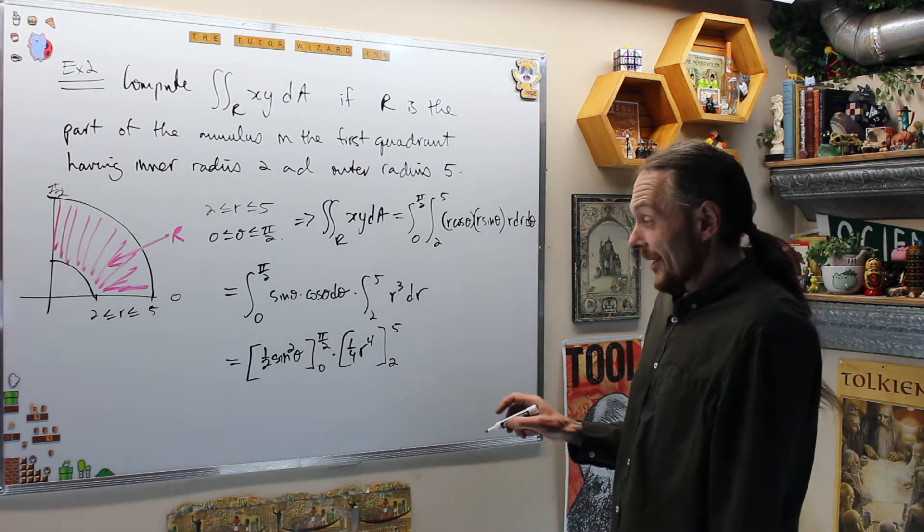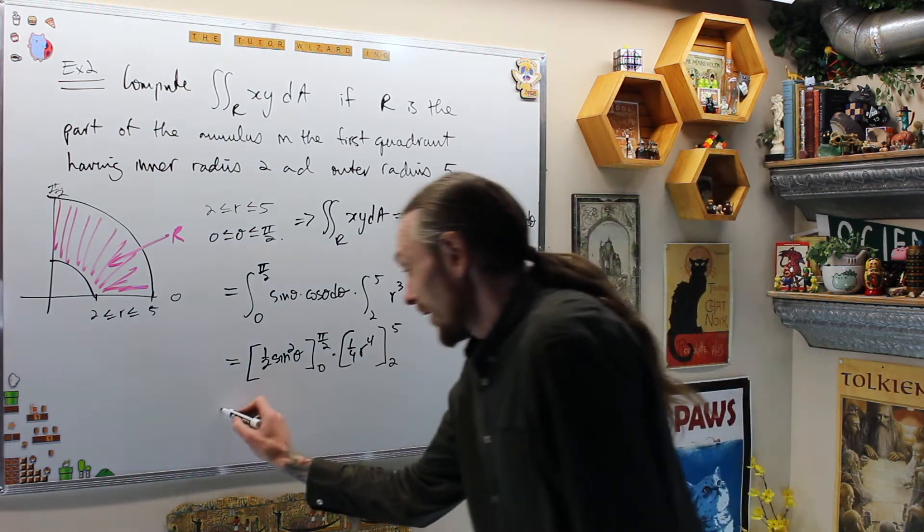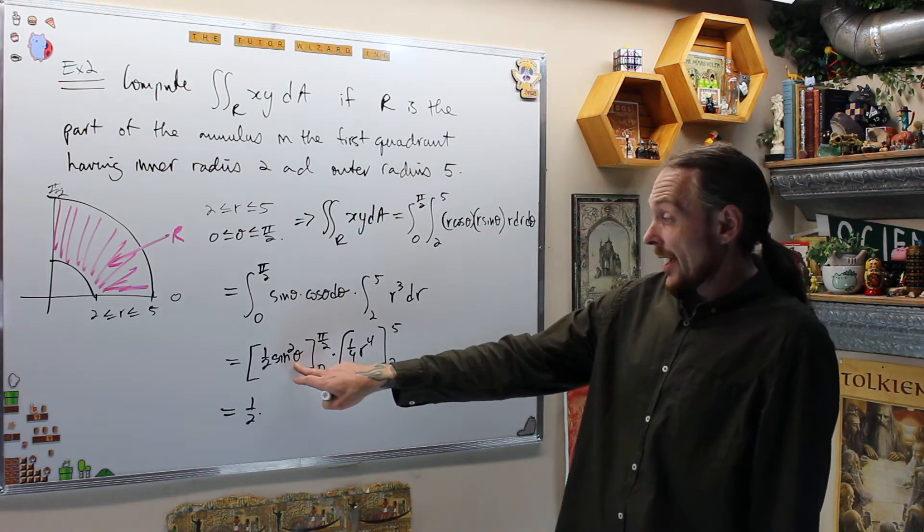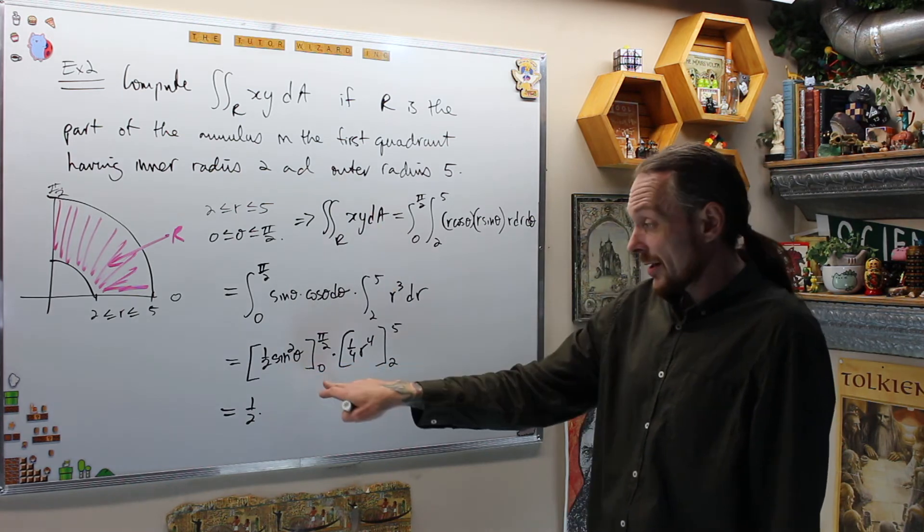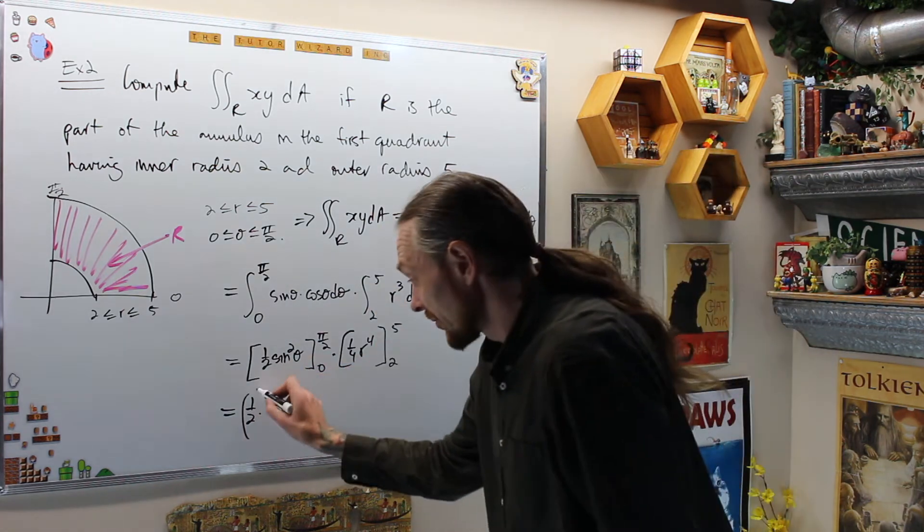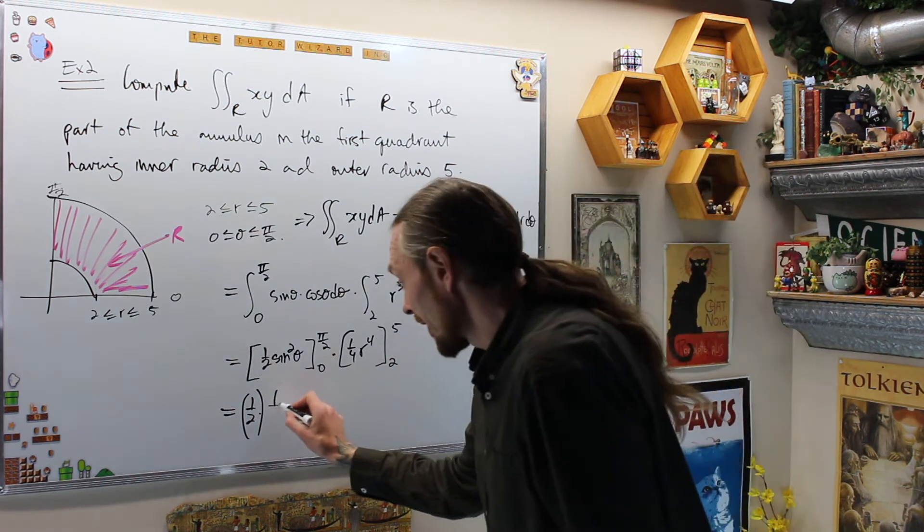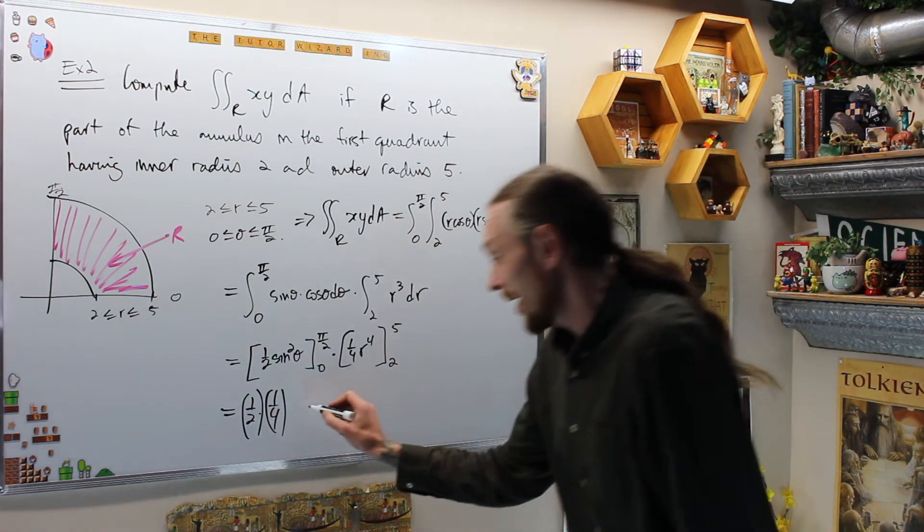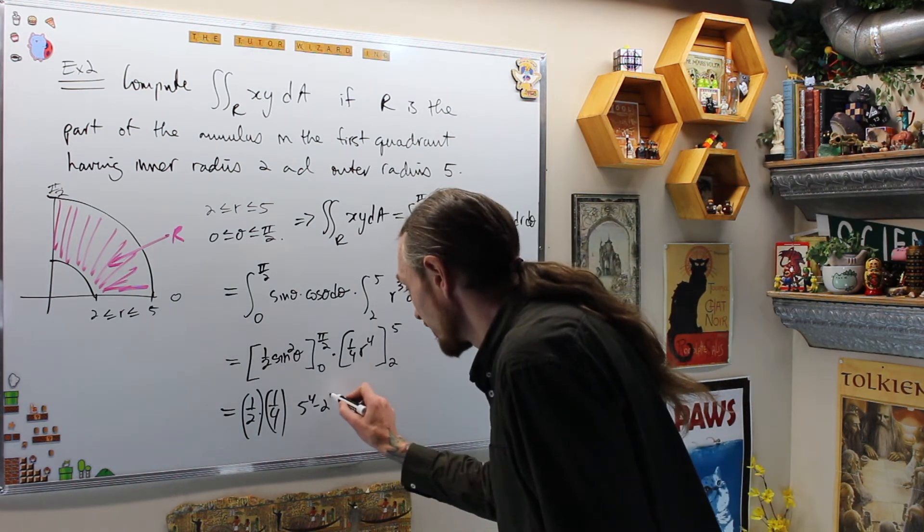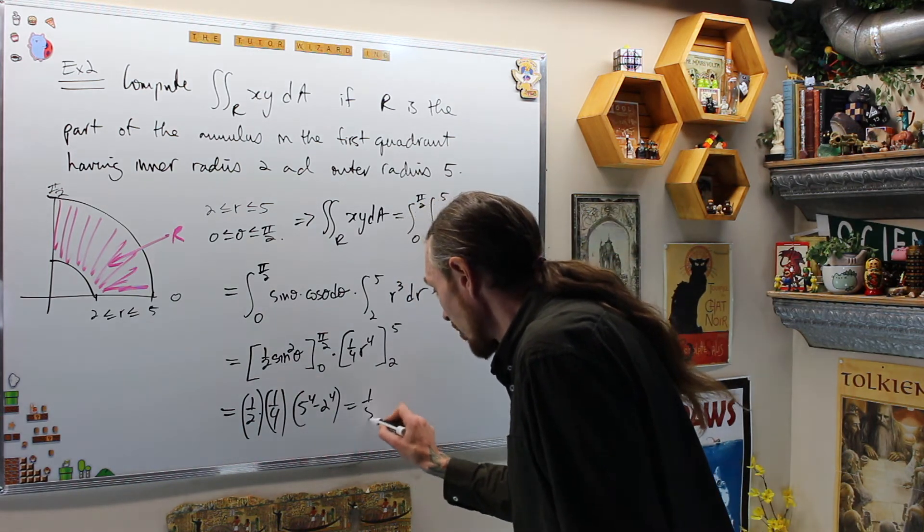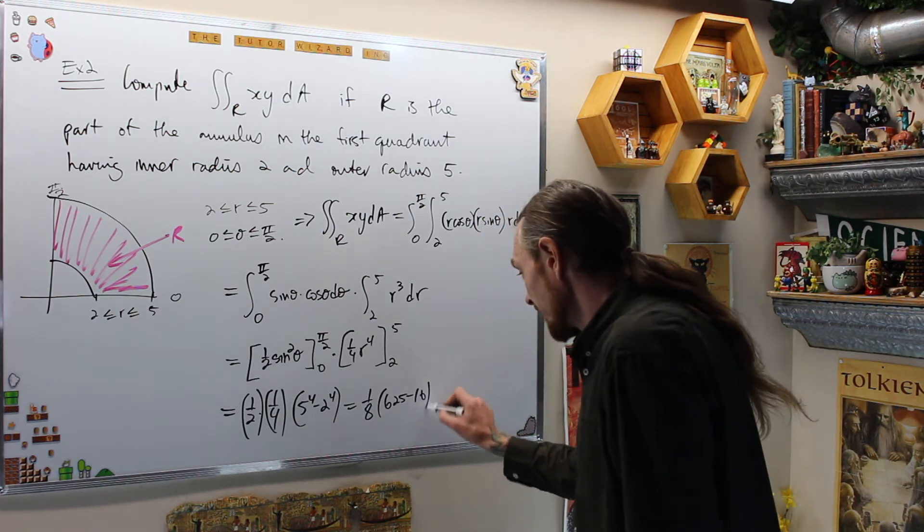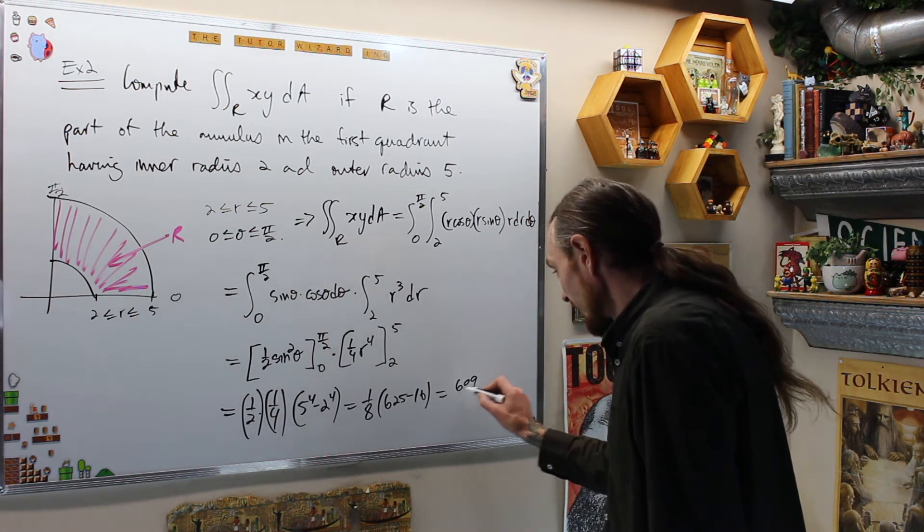And then what are we going to get from this? Luckily, one of these is going to go away. This is going to give me 1 half times sine at pi over 2 is 1 squared is 1. And then at 0, I'm going to get 0. So that just gives me 1 half. And then here, I'm going to have 1 quarter times, now what am I going to have? 5 to the 4 minus 2 to the 4, which is 1 over 8 times 625 minus 16, which is 609 over 8.